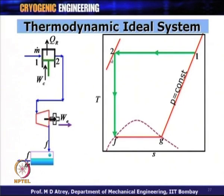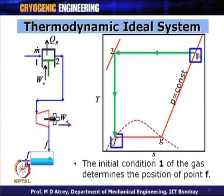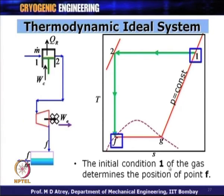The gas is expanded from point 2 to F — from very high pressure to 1 bar — starting at ambient conditions of 300 Kelvin and 1 bar. Point F is on the 1 bar pressure line as a saturated liquid. The initial state 1 and the final state F can be determined as soon as the pressure at that point is known.